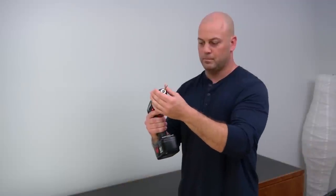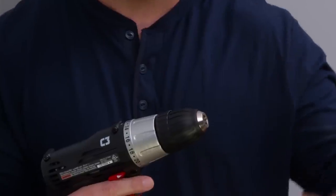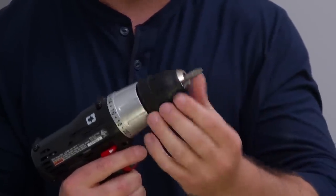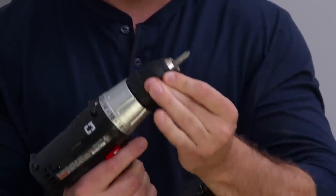To change the bit, twist the collar to open the jaws wide enough to slide the bit in, then twist in the opposite direction to tighten it until it stops and clicks.